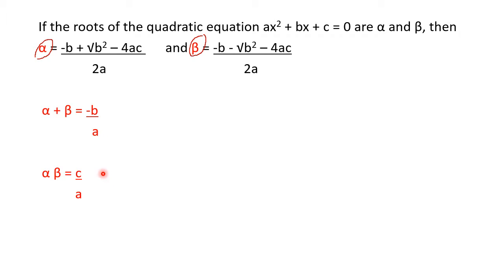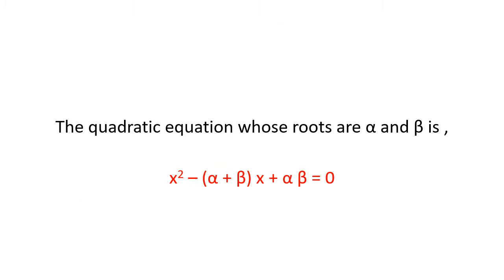The denominators are the same — both are a. When adding we get minus b upon a, because this b gives us minus b. When multiplying we get c upon a. We are going to use this formula when solving the sums in the next exercise.